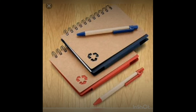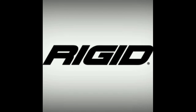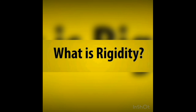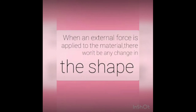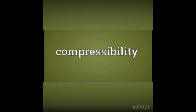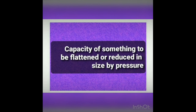Drop the two objects on the floor — they do not flow, they do not change shape, but remain rigid. We conclude that solids do not show the property of fluidity and are highly rigid. Rigidity means that when an external force is applied, there is no change in the shape of the material.